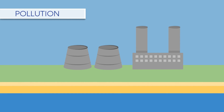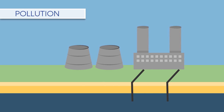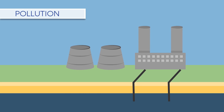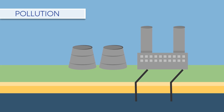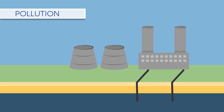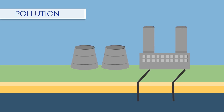Human activities are polluting the air and water. Toxic discharge into water from industrial processes has a negative effect on local aquatic species, by killing, weakening, or affecting their ability to reproduce.